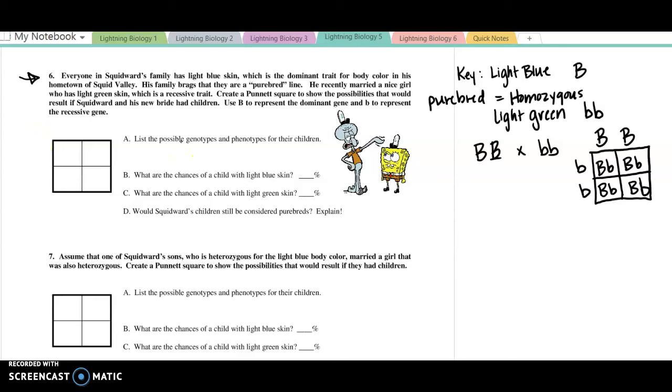List possible genotypes and phenotypes of their children. Well, there is only one genotype that would be Big B, little b, heterozygous. And that would be light blue. What are the chances of a child with light blue skin? Well, that is 100%. All of them will be light blue because they're all heterozygous. What are the chances with light green? That will be zero.